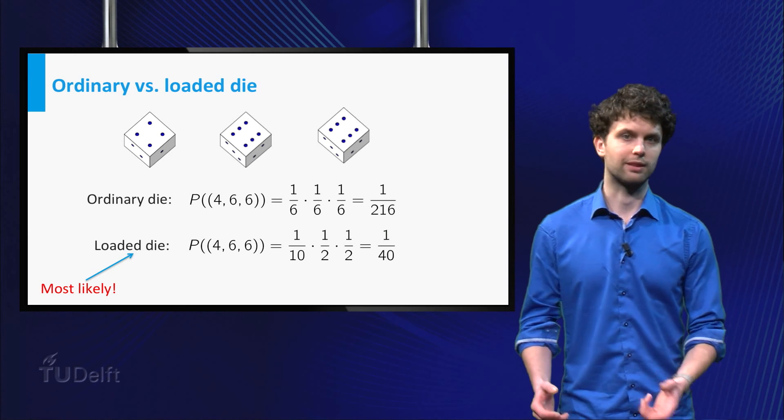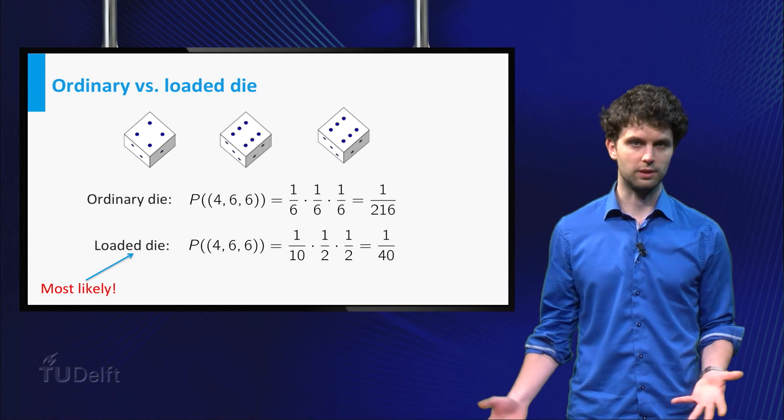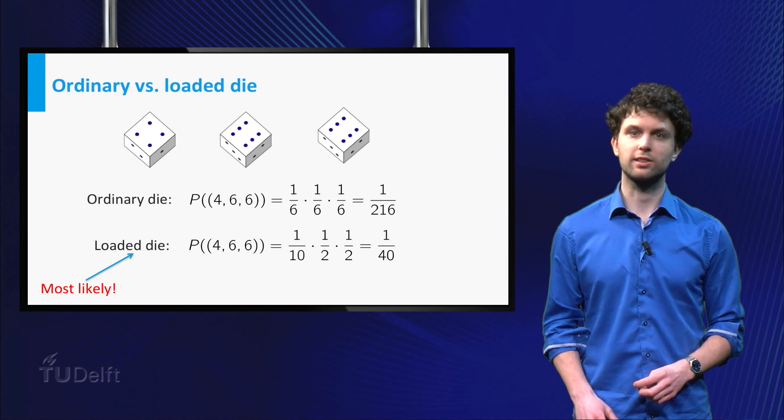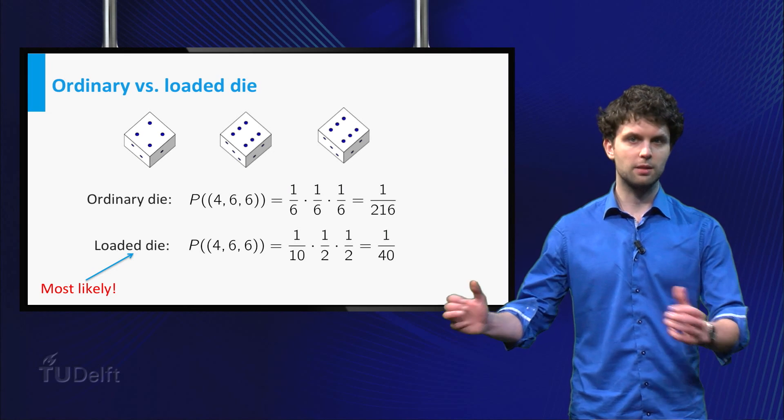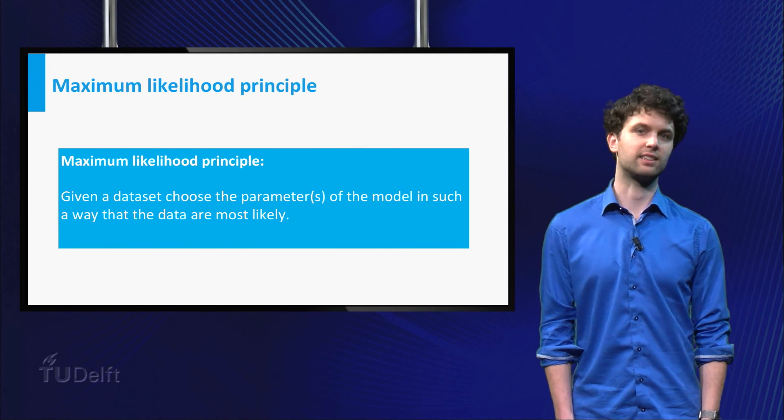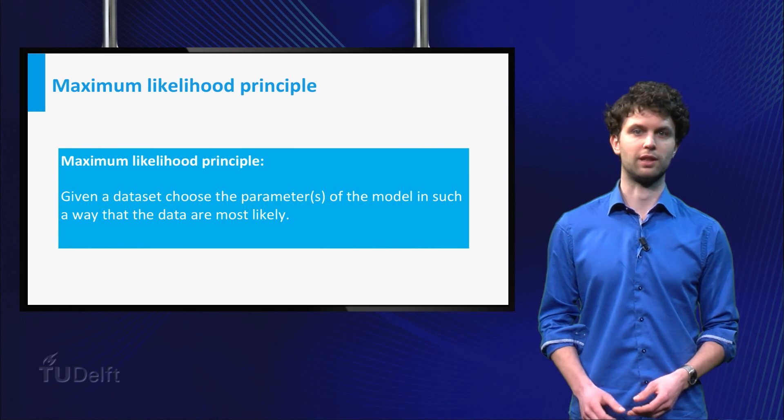In answering the previous question, you probably chose that parameter, in this case one of the two dice, such that the probability of obtaining the actually observed data is the largest. This is the basic idea of the maximum likelihood principle. It is a general principle to estimate parameters, and we can formulate it as follows.